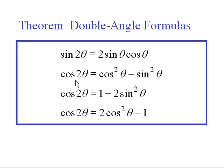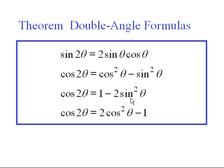This is one version of the cosine double angle formula. I have two other versions, arising from this one by applying the Pythagorean identities. Since cosine squared theta equals one minus sine squared theta, you can write it as one minus two sine squared theta. Or since sine squared theta equals one minus cosine squared theta, you can write it as two cosine squared theta minus one. These versions are handy when you want to express everything in terms of a single trig function.